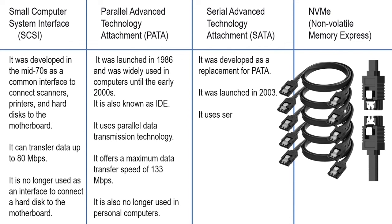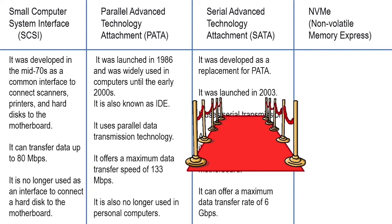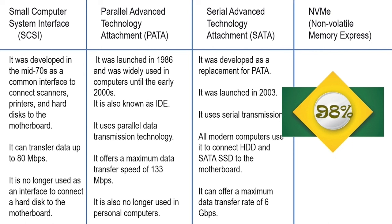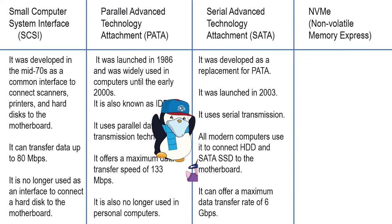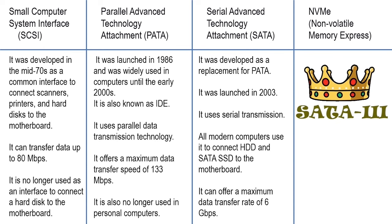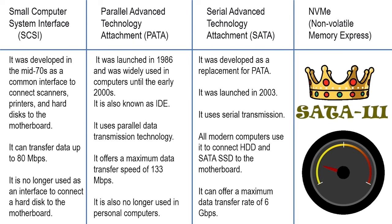SATA was developed as a replacement for PATA and was launched in 2003. It became popular within a few years and within a decade captured 98% of the market share in personal computers. It uses serial transmission, which reduces processing overhead and crosstalk. It is available in different generations: the first generation launched as a 1.5 gigabits per second interface, and the latest third generation offers a maximum data transfer rate of 6 gigabits per second. However, its bandwidth is limited, making it less suitable for high-performance applications.